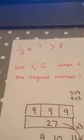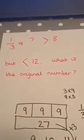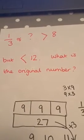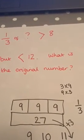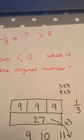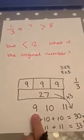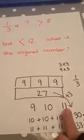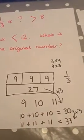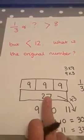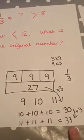So let's go back to our original question. One third of a number is greater than 8 but less than 12. What is the original number? Well, the number that is the third could be 9, 10 or 11. So your original number is either 27, 30 or 33.